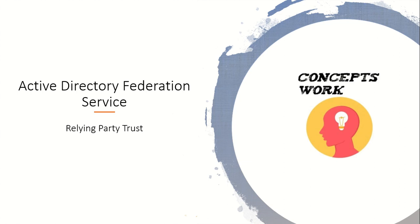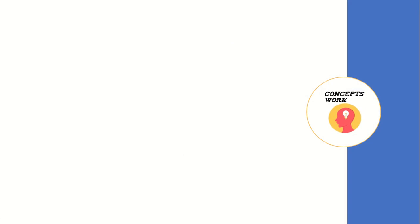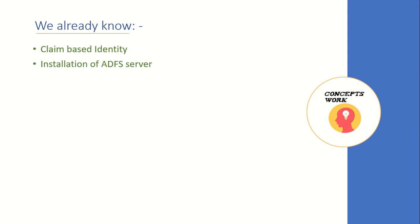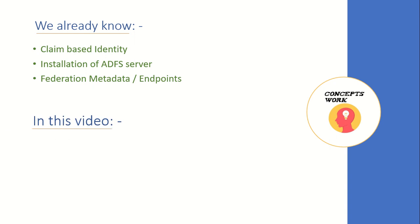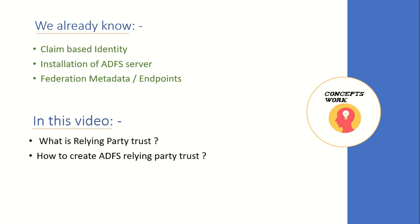Hi guys, hope you're all doing well and welcome back to our series on Active Directory Federation Services. In this video I'm going to talk about Relying Party Trusts. If you're watching this series from the beginning, we already know what a claim-based identity is, how to install and set up an ADFS server, and what federation metadata and endpoints are. Our focus will be on what a relying party trust is and how you can create one on your ADFS server.